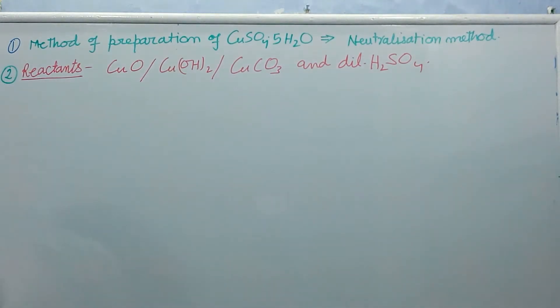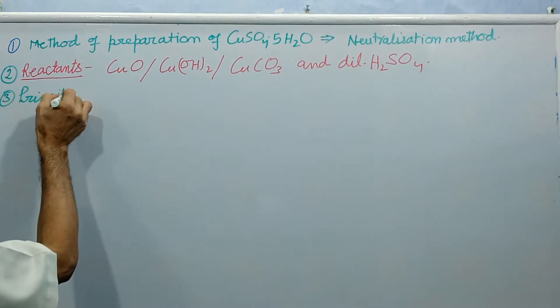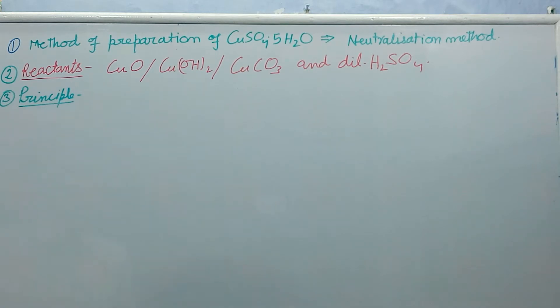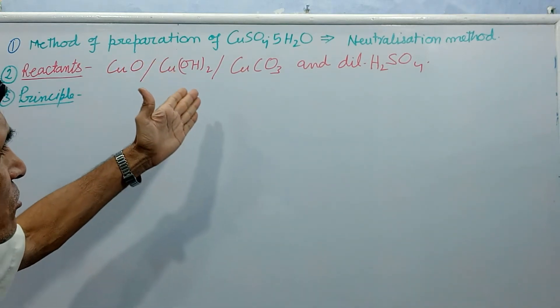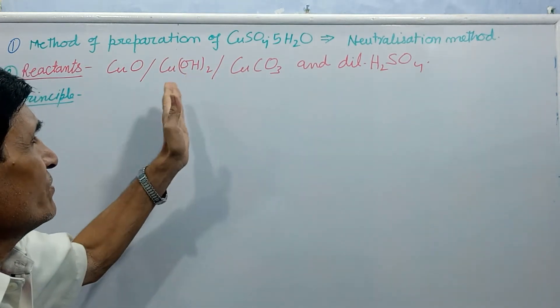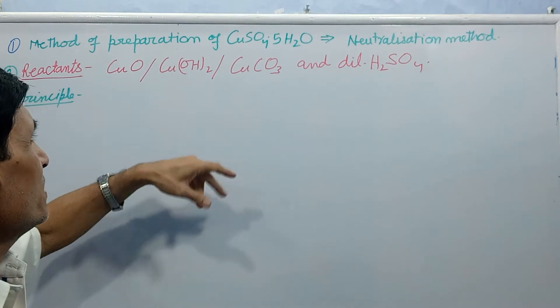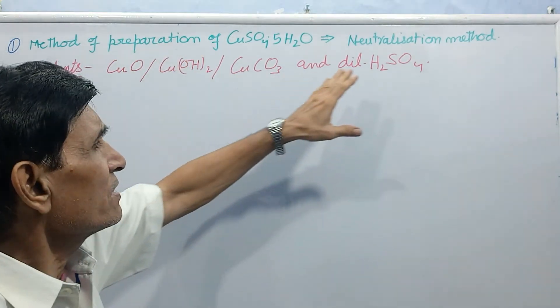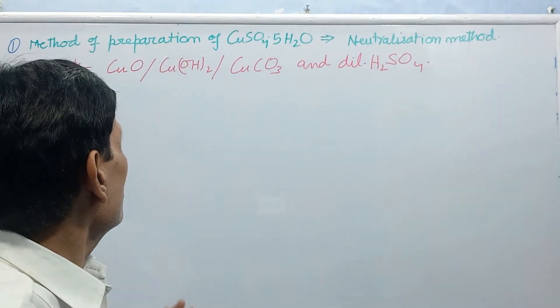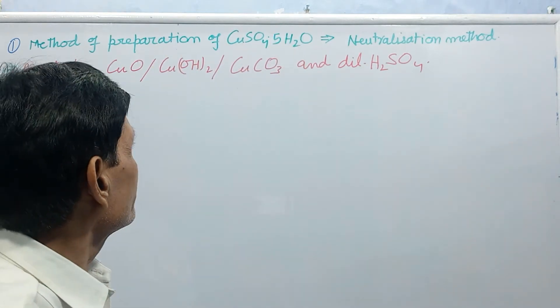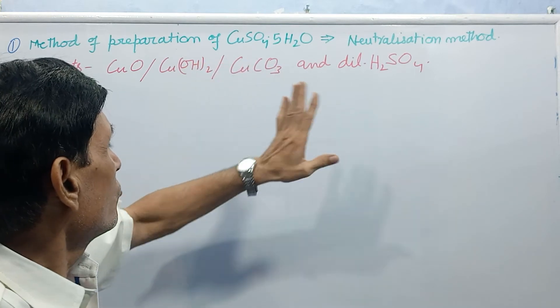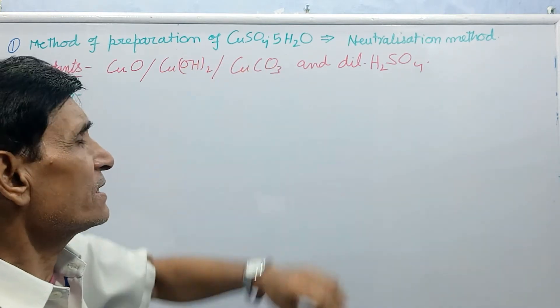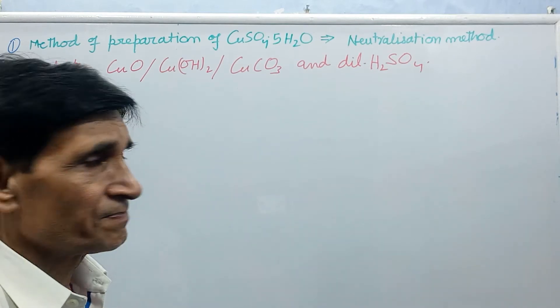Next is number 3, principle. Metal oxide, metal hydroxide, metal carbonate - these are insoluble base. And this is carbonate salt of copper. React with dilute sulphuric acid to form sulphate salt and water. In case of carbonate, there is release of carbon dioxide gas.